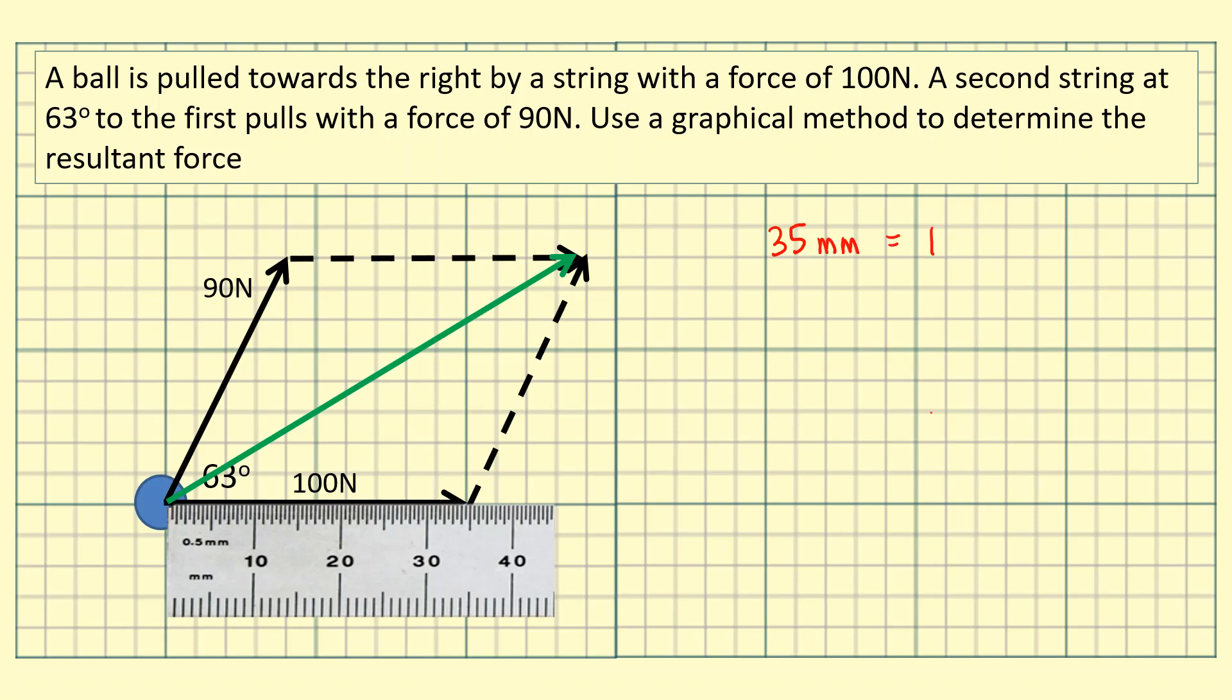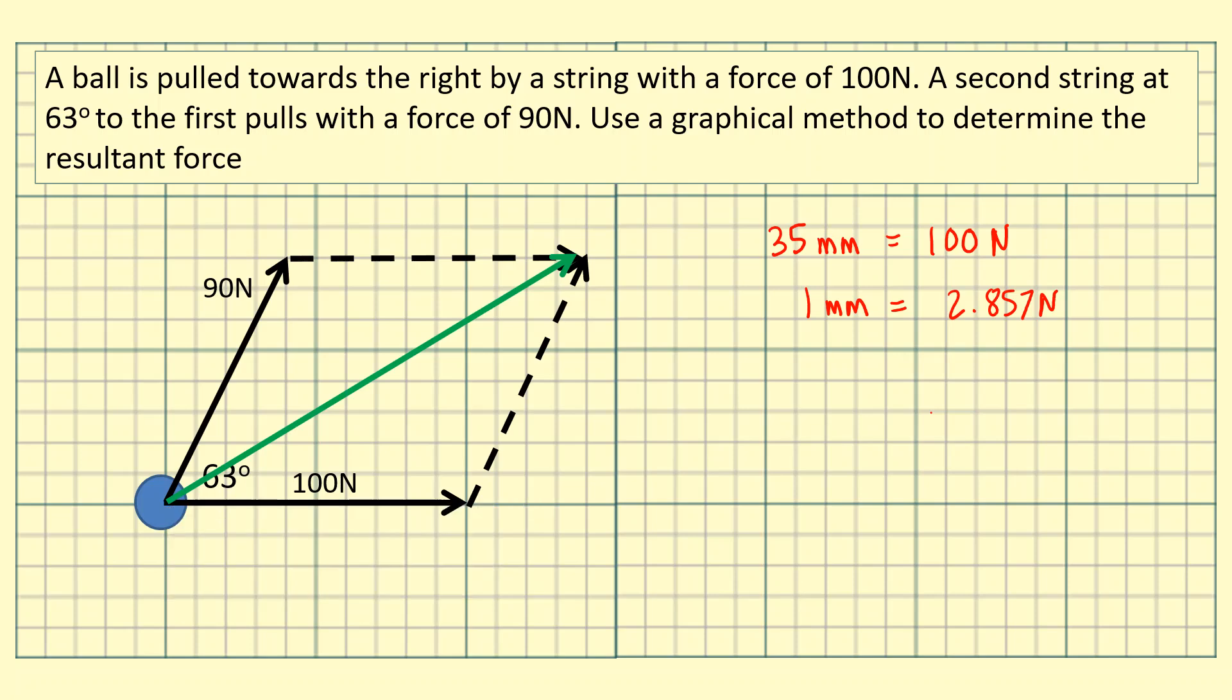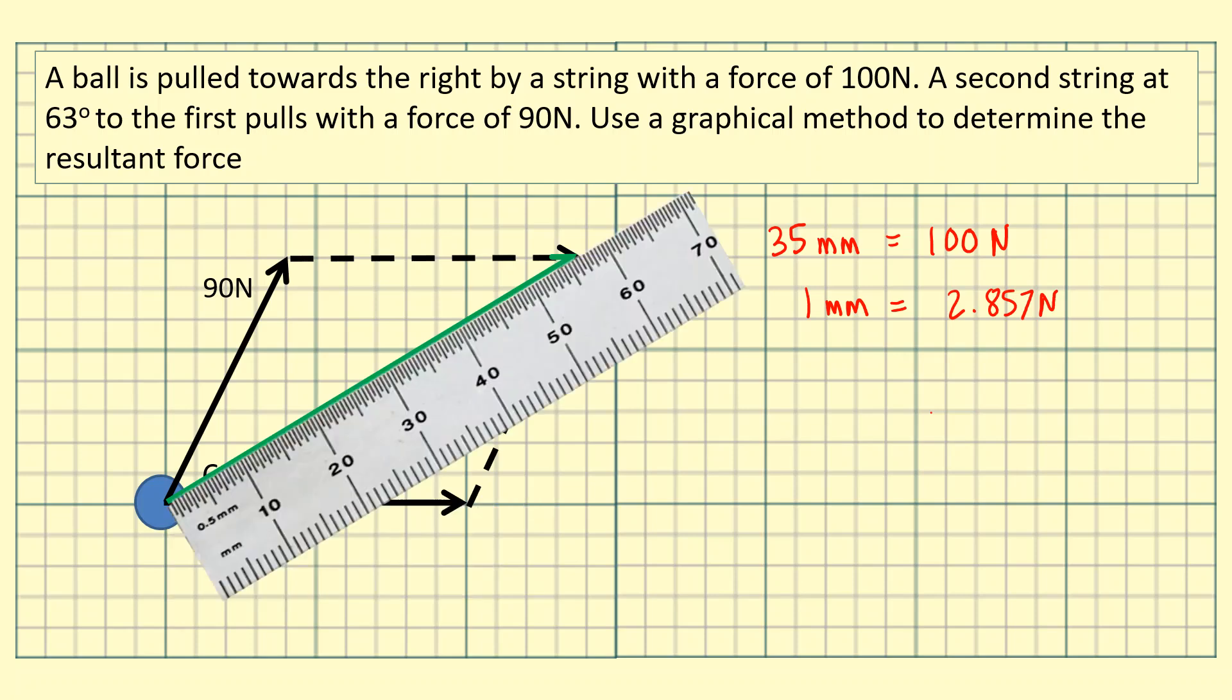So I can come up with a scale that means that one millimeter is equal to 2.857 Newtons. I've just divided both sides by 35. Now using my ruler, I've already come up with the scale, now I can measure the resultant and the resultant length is 56.5 millimeters.